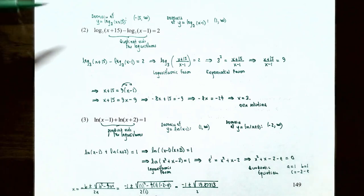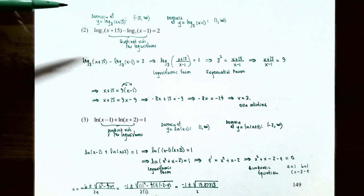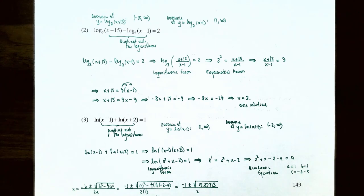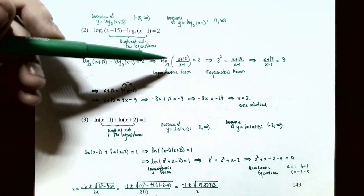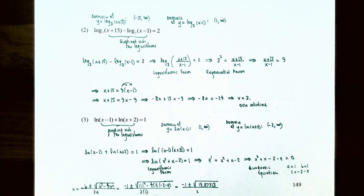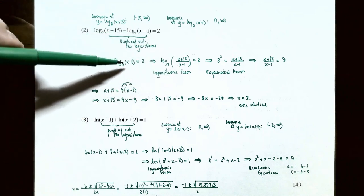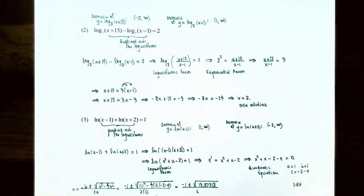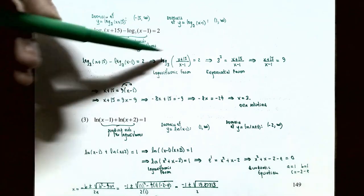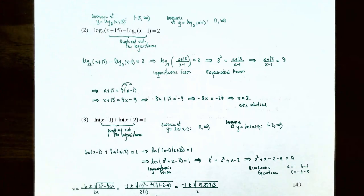Problem 2: solve log₃(x+15) − log₃(x−1) = 2. You have two logarithms on the left with a subtraction, so use the quotient rule to combine them: log₃((x+15)/(x−1)) = 2. This is logarithmic form with a constant on the right, so convert to exponential form: 3² = (x+15)/(x−1).